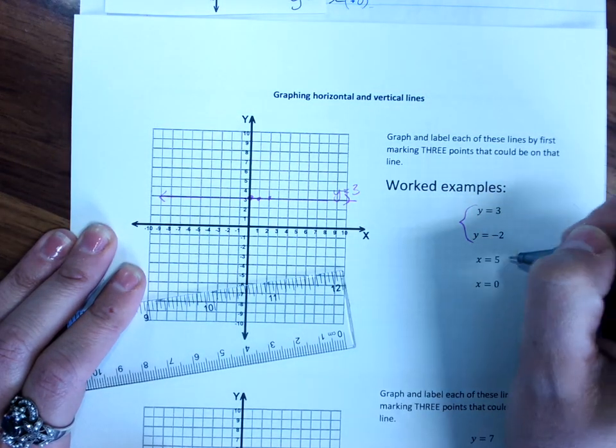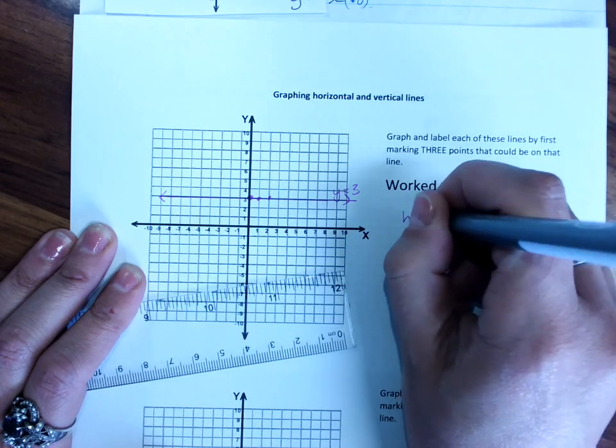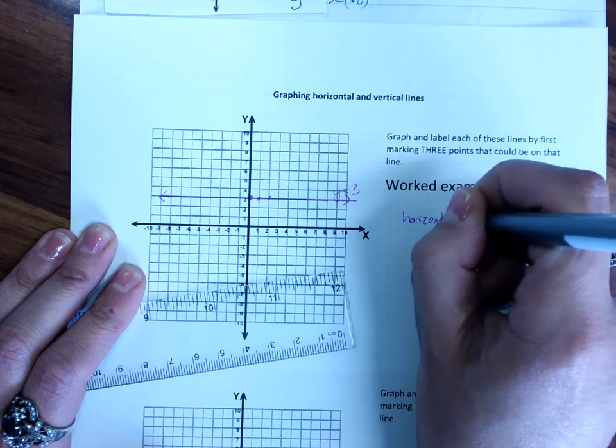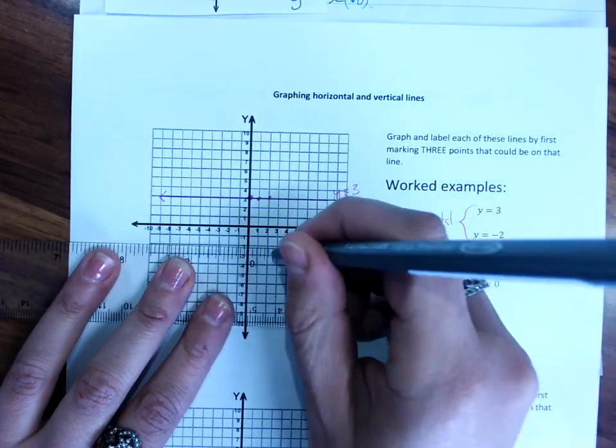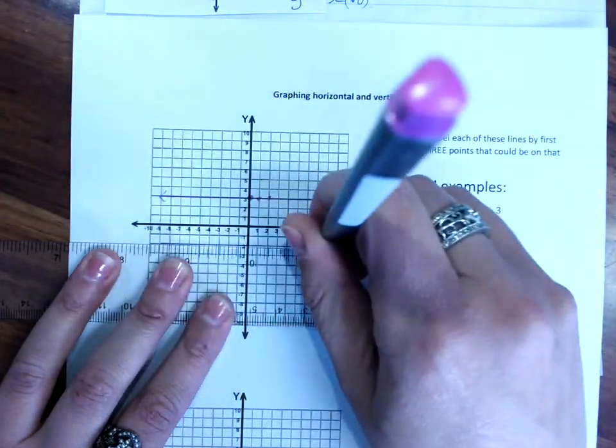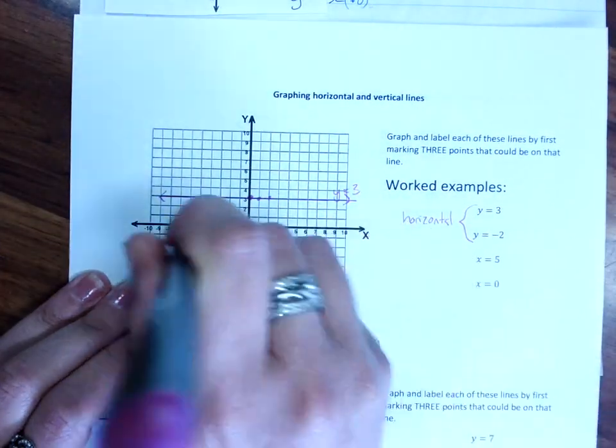So horizontal and vertical lines, the y equals lines are horizontal. So y equals negative 2, we go to y equals negative 2. And everywhere along that line, y is negative 2. I don't care what x is.